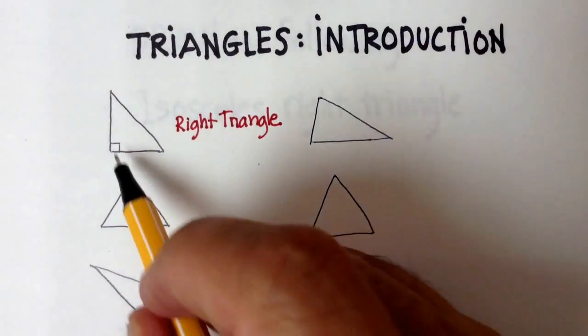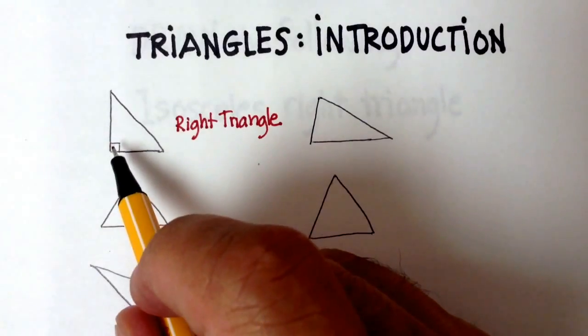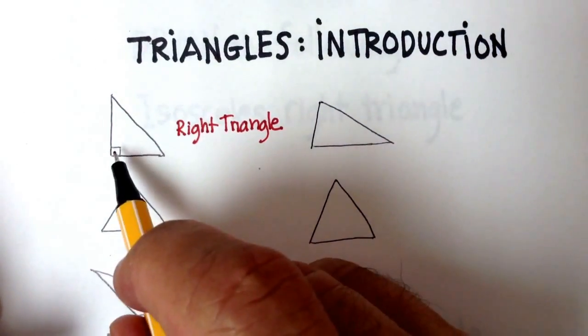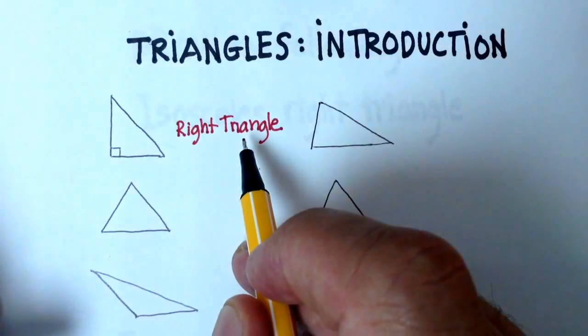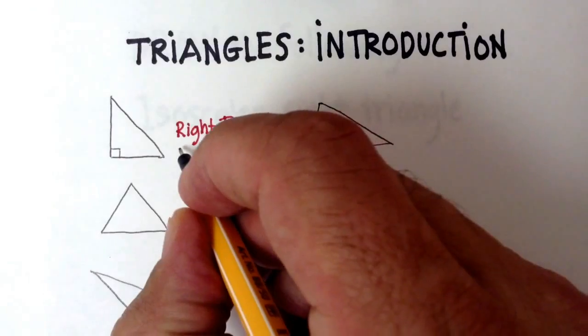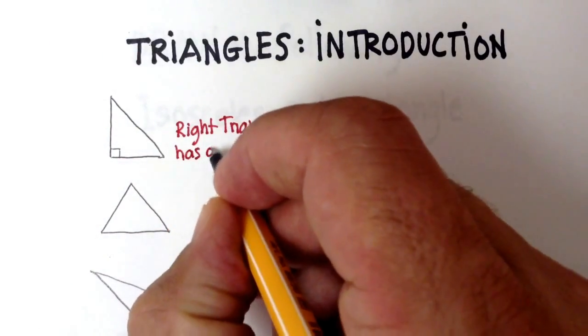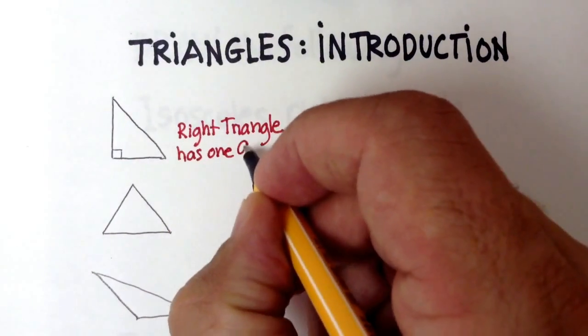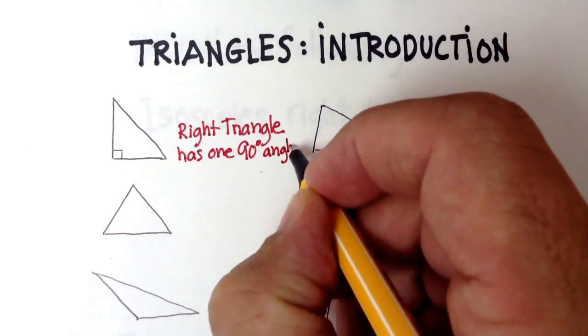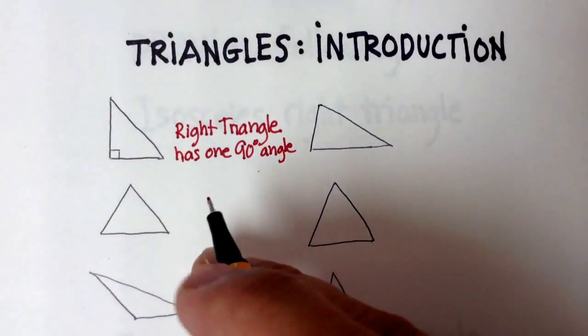Now, it's a right triangle because it has a 90-degree angle in it, or a right angle in it. So it only needs to have one, and then it becomes a right triangle. So that's the characteristic of this. It has one 90-degree angle, and that's all it needs to become a right triangle.